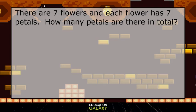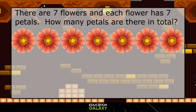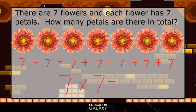This next problem says there are 7 flowers and each flower has 7 petals. How many petals are there in total? So we have 7 flowers, each with 7 petals. That means we would calculate 7 plus 7 plus 7 plus 7 plus 7 plus 7 plus 7, which is 7 times 7, which equals 49. So our answer is 49 petals.